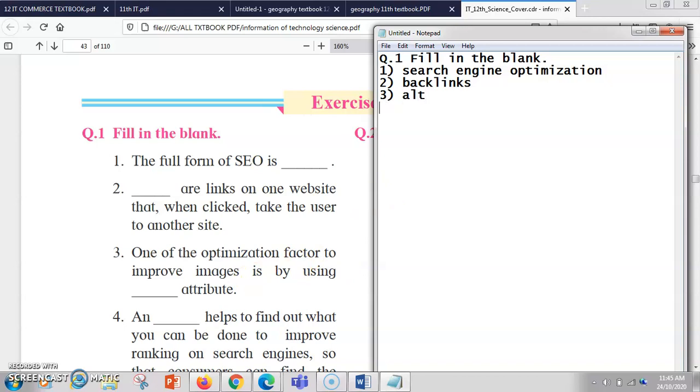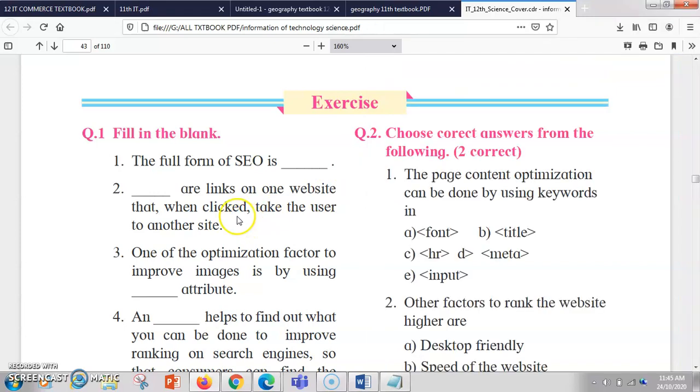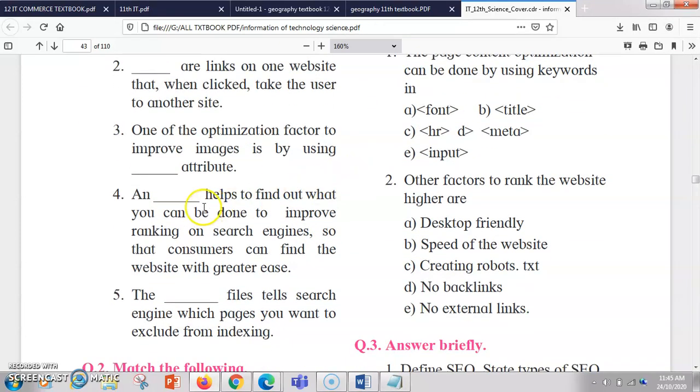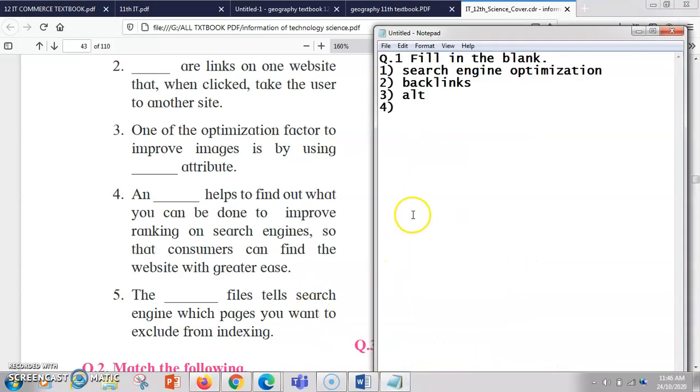Next, and blank helps us to find out what you can be done to improve ranking on the search engine so that customers can find the website with greater ease. So basically the SEO audit always helps you to find out what are the problems and what are the solutions, what changes you can do to rank your website at a higher number. So audit always helps you to recognize the loopholes and then it gives you scope for improvement.